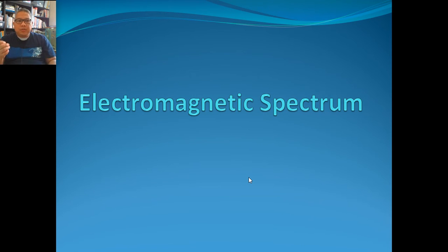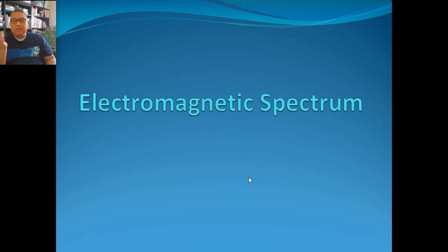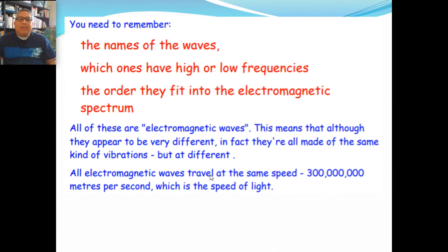When you use your phone, you're using waves. When you're looking at things, you're looking at different light waves. When you're using your remote control, you're using waves. When you're using your microwave, that's another type of wave. When you have an accident and you want to check whether your bones are broken, you will use another form of wave. So electromagnetic spectrum is something you're familiar with because you've encountered it every day.